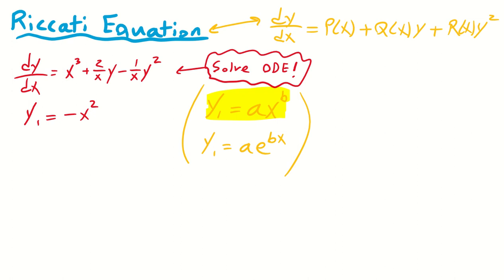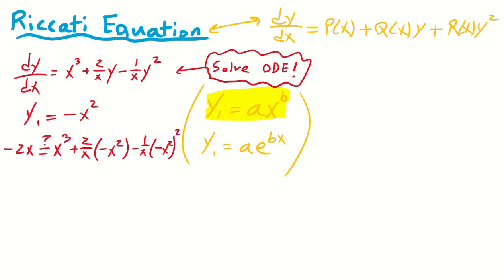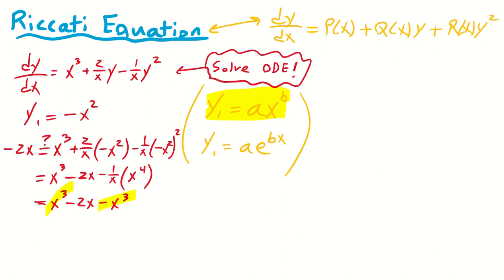Let's take the derivative: dy/dx for y₁ = -x² is minus 2x. We check if this equals the right-hand side: x cubed plus 2 over x times (-x²), minus 1 over x times (-x²) squared. That gives x cubed minus 2x minus (1/x)(x⁴), which is x cubed minus 2x minus x cubed. The x cubed terms cancel, leaving minus 2x on both sides. The solution checks out.